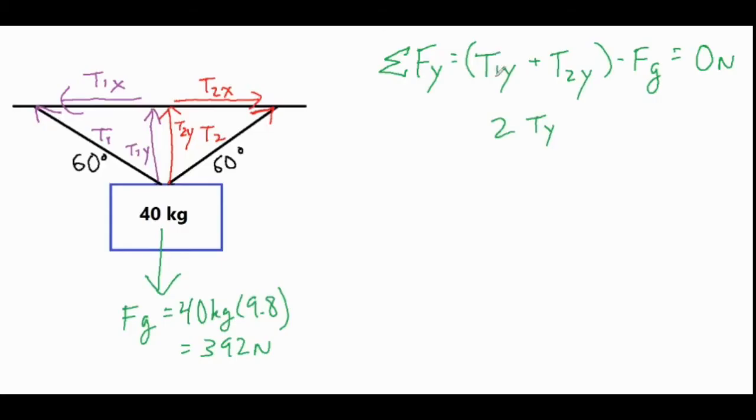We can combine these two together and call it 2Ty, and we won't distinguish if it's T1 or T2 because those are the same. That equals the force of gravity, which is 392 newtons. We divide both sides by 2, so Ty equals 196 newtons.